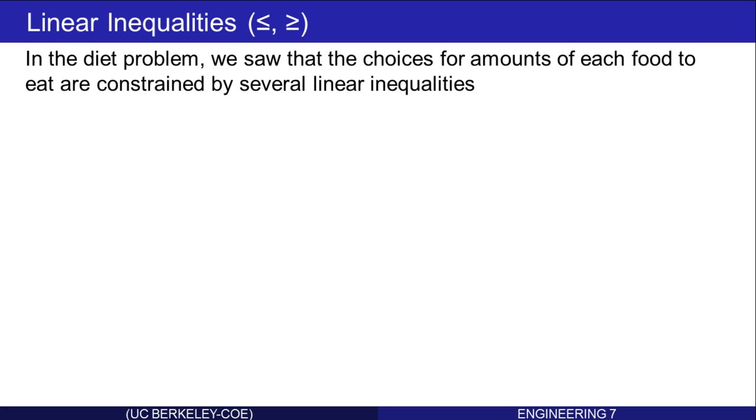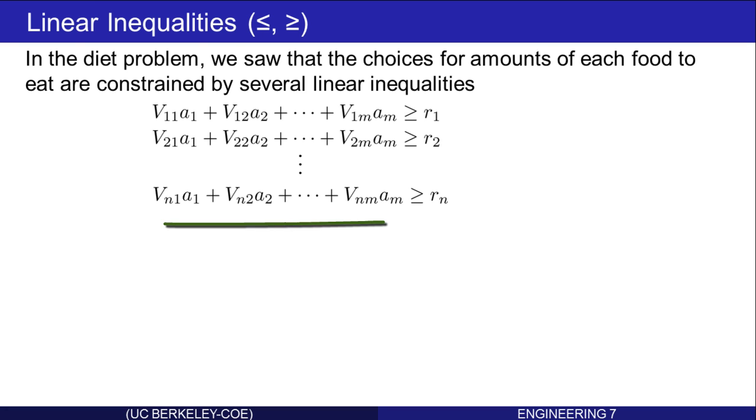In the diet problem, we saw that the choices for the amounts of each food are constrained by several linear inequalities. These were in this form. The left-hand side of each equation represented the amount of a particular nutrient consumed by eating the various amounts of food, and the right-hand side was a minimum daily requirement. Therefore, the goal was to have the amount consumed greater than the daily requirement.